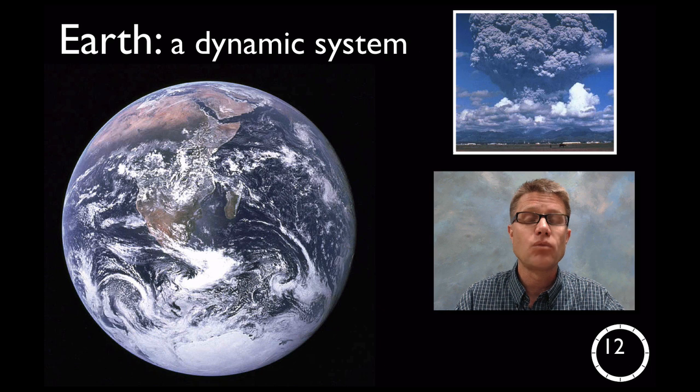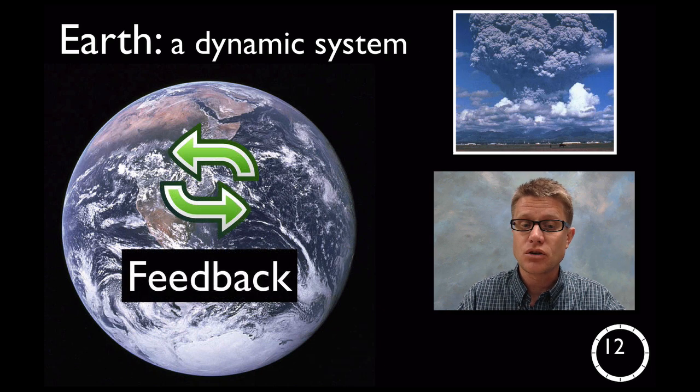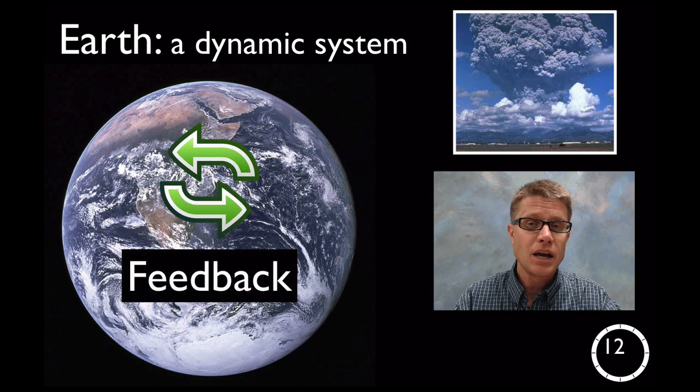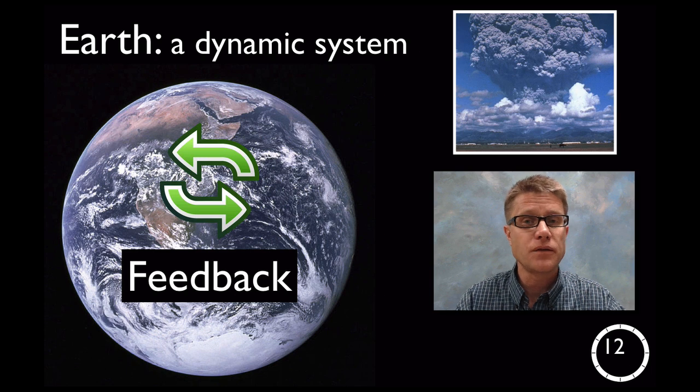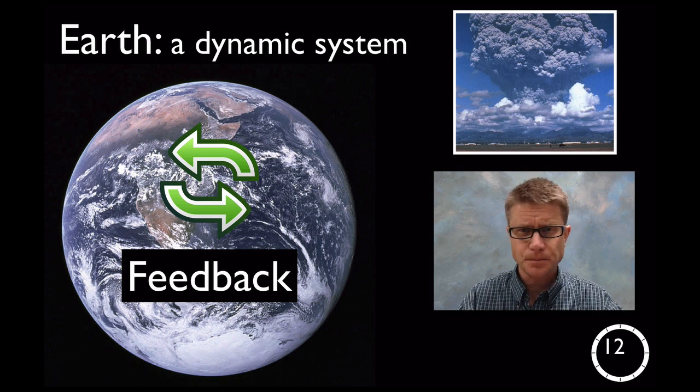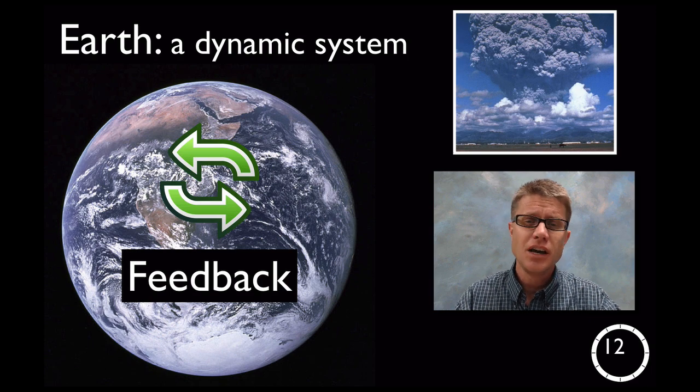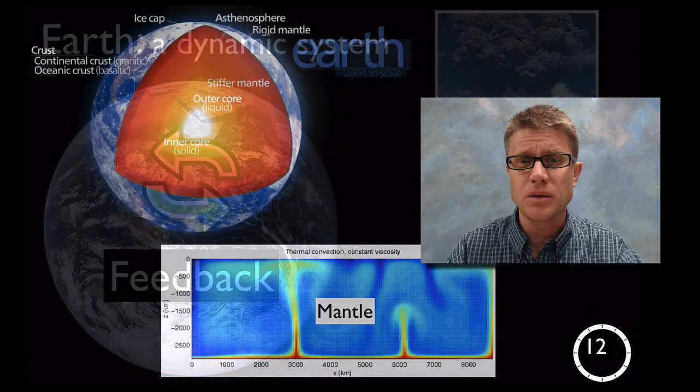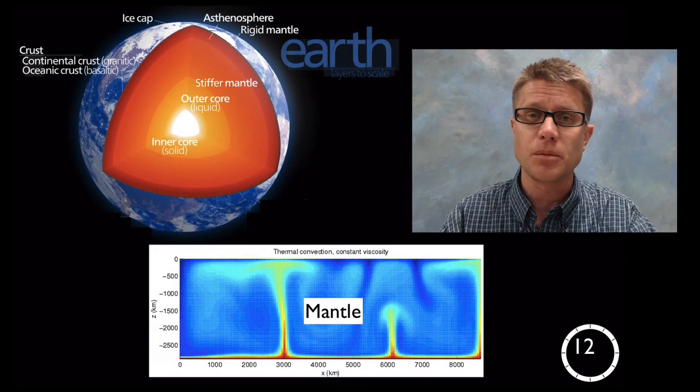As you move into high school, you want students to understand that the Earth is incredibly dynamic. Those dynamics are built upon feedback loops. Feedback loops are sometimes going to keep our Earth stable and sometimes push it out of stability. But it's hard to understand all of the feedback loops on our planet because it's incredibly complex.